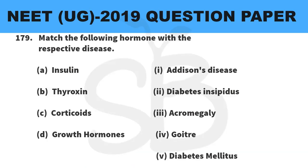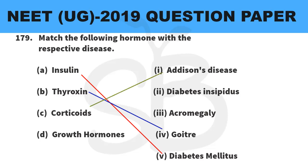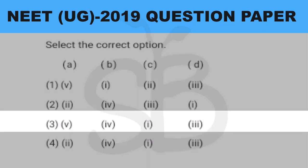Question number 179: match the following hormones with their respective diseases. Option A: insulin — diabetes mellitus. Option B: thyroxin — option 4, goitre. Option C: corticoid — option 1, Addison's disease. Option D: growth hormone — option 3, acromegaly. So the correct answer is option 3: A5, B4, C1, and D3.